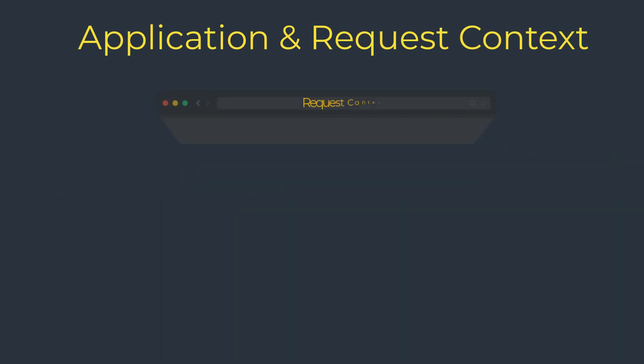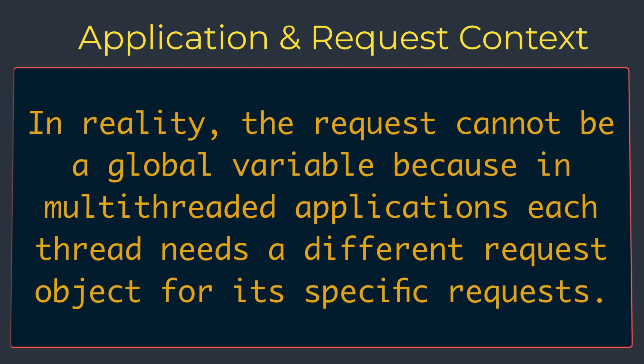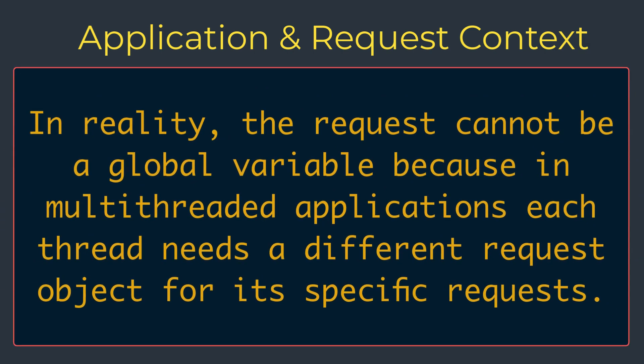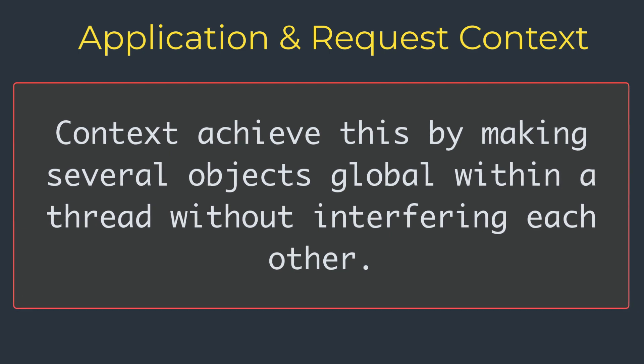With contexts, view functions can use the request object as if it were a global variable. In reality, request cannot be a global variable in a multi-threaded server — several threads can be working on different requests from different clients all at the same time, so each thread needs to see a different object. Context enables Flask to make certain variables globally accessible to a thread without interfering with the other threads.